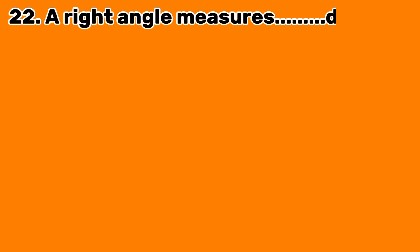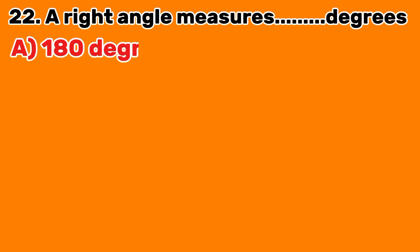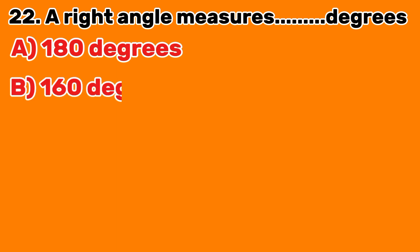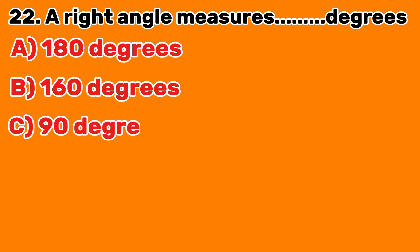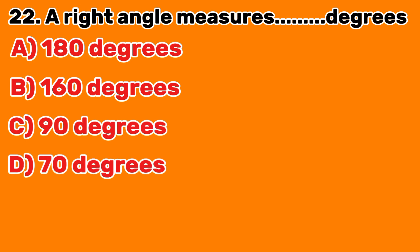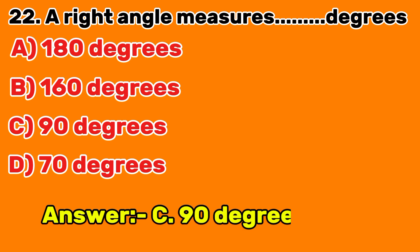Question 22: A right angle measures how many degrees? A. 180 degrees. B. 160 degrees. C. 90 degrees. D. 70 degrees. Answer C: 90 degrees.